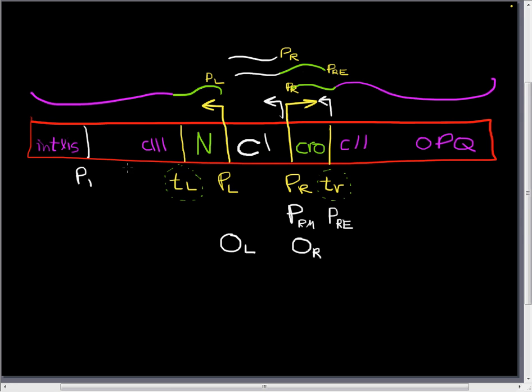So in the lytic cycle, we're going to have more crow around, and this crow protein is going to also be able to bind to OR and OL, just like C1 was able to.